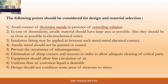Always try to avoid contact of dissimilar metals in the presence of a corroding solution. Remember galvanic cell corrosion — bimetallic corrosion — where two different metals and a corroding solution lead to cell formation: one metal forms the anode, the other the cathode, with an electrolyte solution completing the cell. Avoid allowing that cell to form.